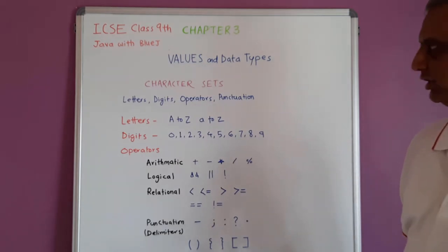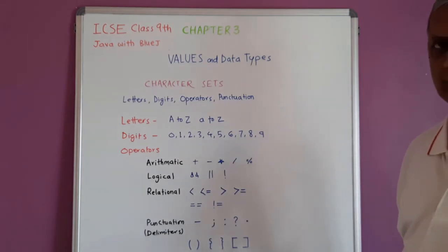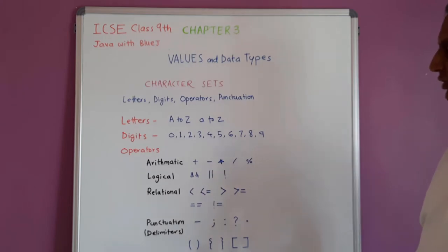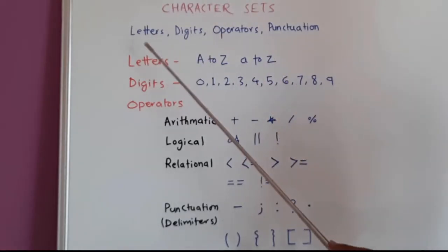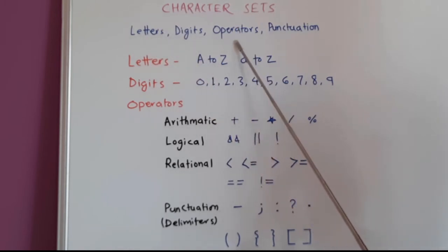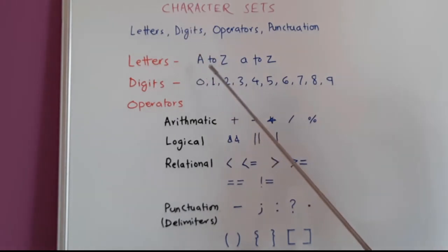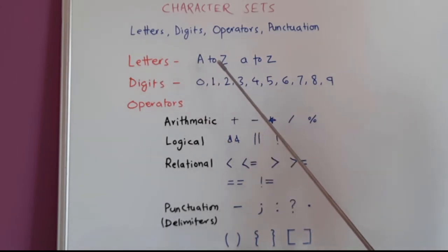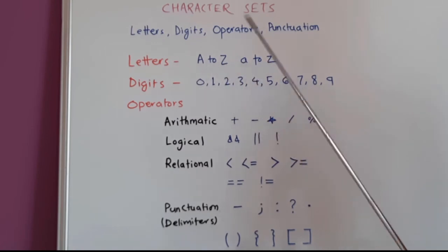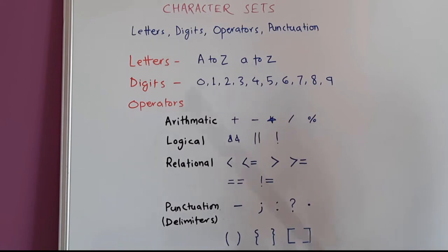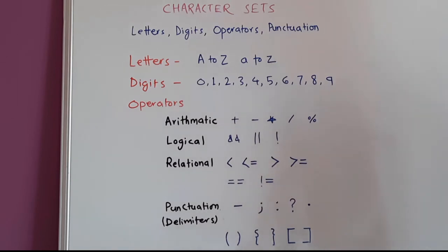Let us see what character set can be used in Java programming. We can use letters, digits, operators, and punctuation marks (also called delimiters). Since we use English in India, we can use all characters of the English language from the Latin character set — capital A to capital Z, small a to small z, all 26 alphabets. We can also use digits 0 through 9.